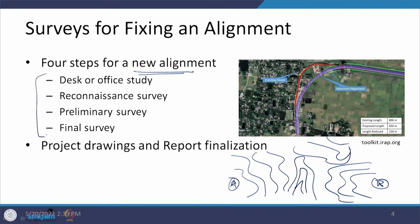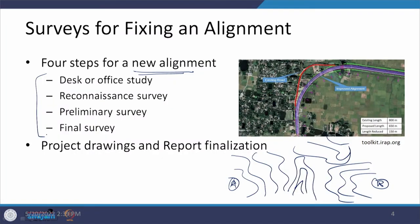The first step we are going to talk about is an office study or desk study, where we try to rely on readily available information in terms of different documents and try to identify the possibilities — whether there is a possibility of going straight or in some other fashion. Then we go to the next step, which is a reconnaissance survey, where we gather further information on all possible routes or alignments between locations A and B.